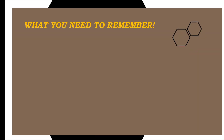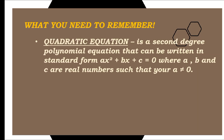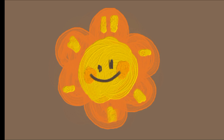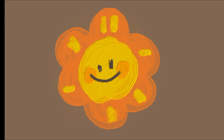Here is what you need to remember: A quadratic equation is a second-degree polynomial equation written in standard form Ax² + Bx + C = 0, where A, B, and C are real numbers, and A ≠ 0. An equation can still be considered quadratic if it has only two terms, as long as it contains the quadratic term Ax². That's it for today — see you in the next lesson, bye bye and thank you everyone!